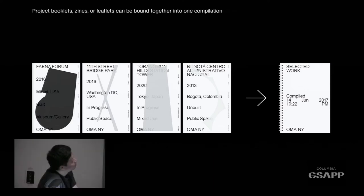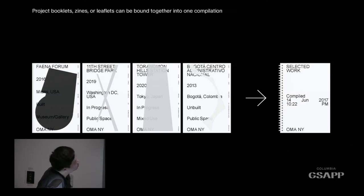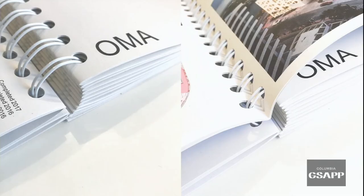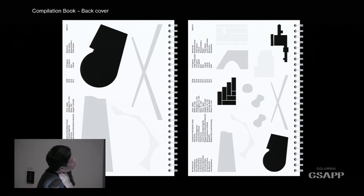To counter that density, we introduced zines — each one built around a single dumb idea: a booklet of blue foam towers, or square plan projects on a square book. We devised the system for single project booklets that can be compiled into selected-work booklets — if a client is interested in art projects, you compile all the art projects and give them that booklet. One pet peeve of mine is not knowing when something was made, so the compilation date is always visible. Each booklet's saddle-stitch binding creates natural separations when bound together. On the back of each booklet is Excel-type information plus the icon of the building.